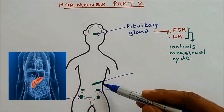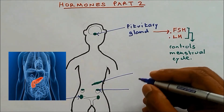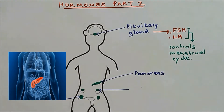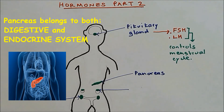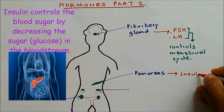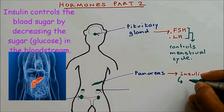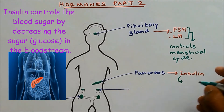This organ is the pancreas. You have seen the pancreas in the digestive system — it produces the three main enzymes — but the pancreas is also part of the hormonal or endocrine system. The function of the pancreas is to produce insulin, and it controls the blood sugar level.